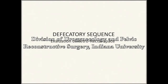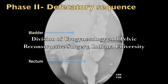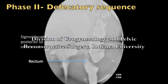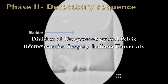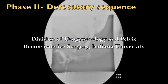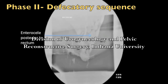Similar to the rectovaginal space, the retro-rectal space can also be difficult to evaluate during physical exam. Prolapse into the retro-rectal space has not been well described in the urogynecologic or colorectal literature. This is a patient with a chronic history of rectal fullness and difficulty with bowel movements whose physical exam was normal, and whose straining image on DCP was also normal. The defecatory sequence, however, shows a large sigmoidocele posterior to the rectum in the retro-rectal space. In another patient, a large rectal prolapse with an associated enterocele in the retro-rectal space is seen.